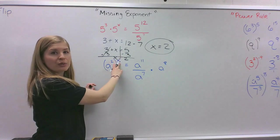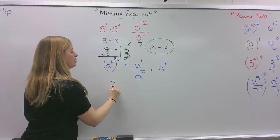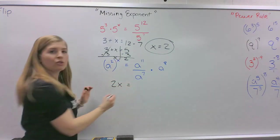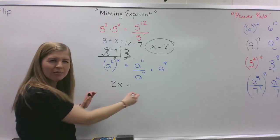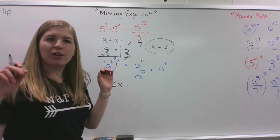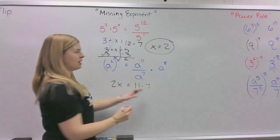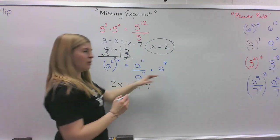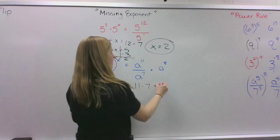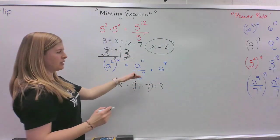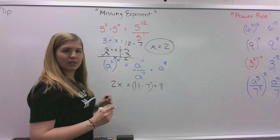So we have 2 raised to the x. We know that we multiply. You could also write it as 2 times x. I just put it as 2x because that's another way to say multiplication. And then we have 11 minus 7 plus 8, right? This would be subtraction, and then we'd be adding those together.